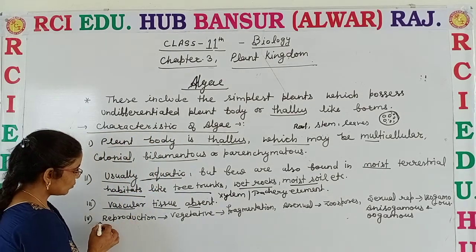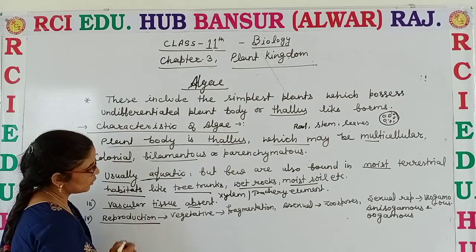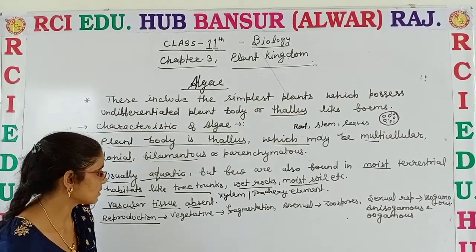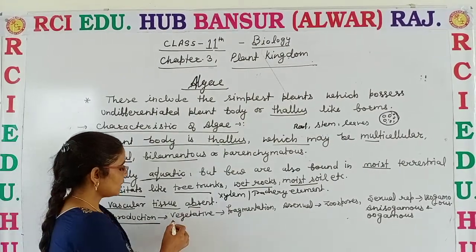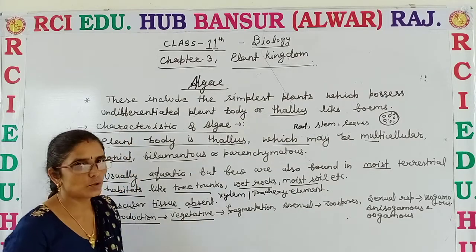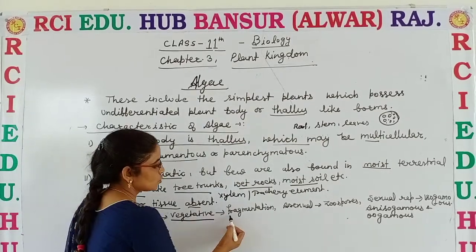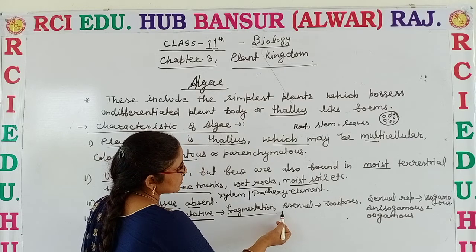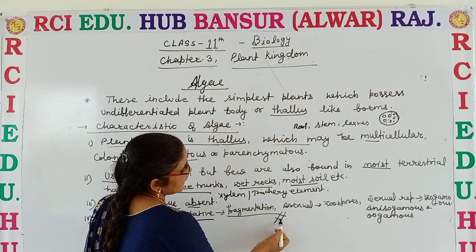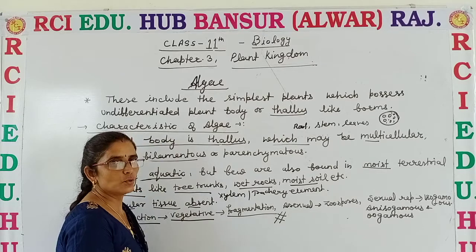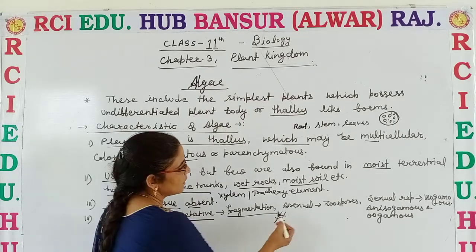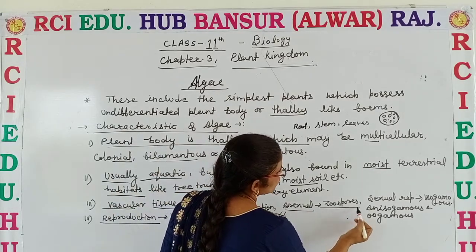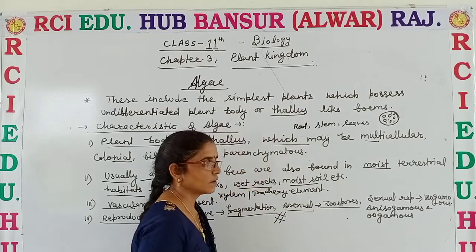Regarding the mode of reproduction, algae can reproduce by three means. First, vegetatively they can reproduce through fragmentation — if you cut a simple organism into two or three pieces, each piece develops into a new individual. The asexual mode of reproduction takes place with the help of zoospores.